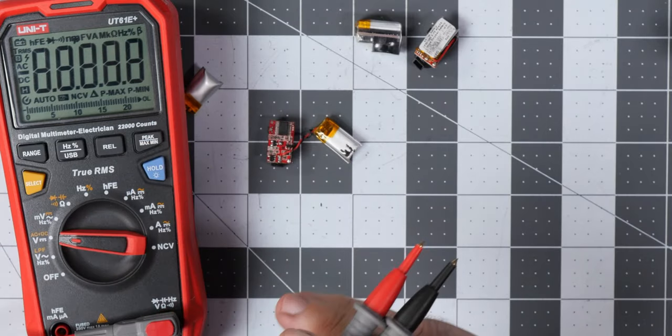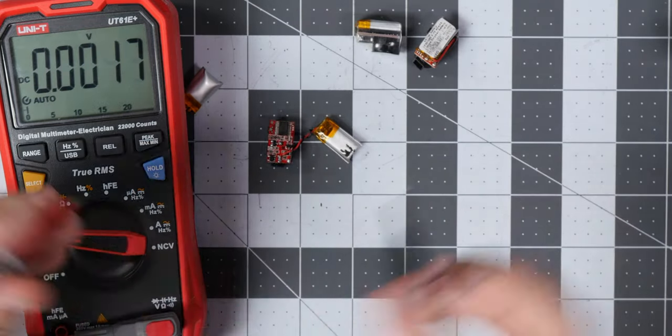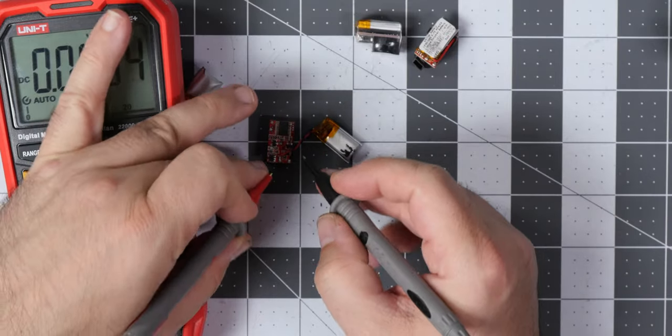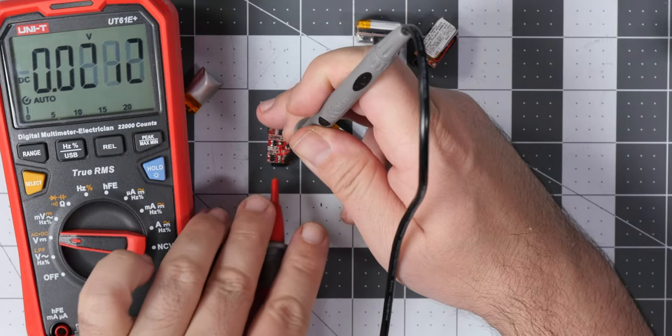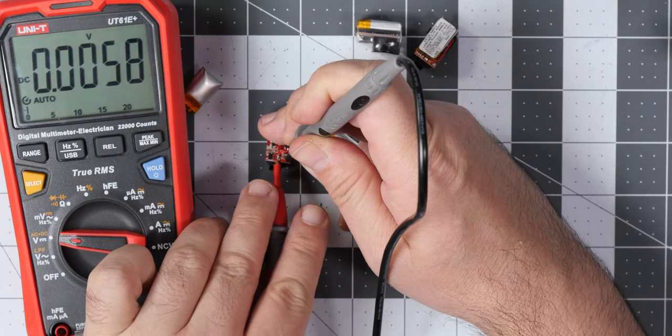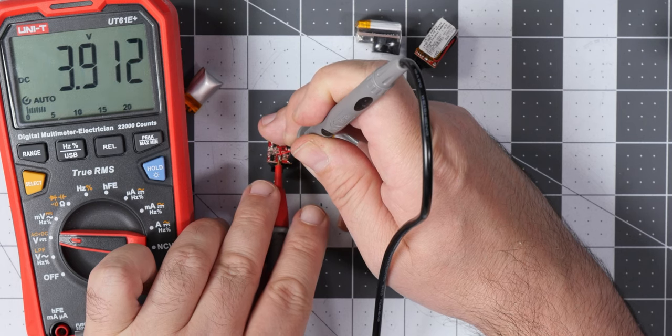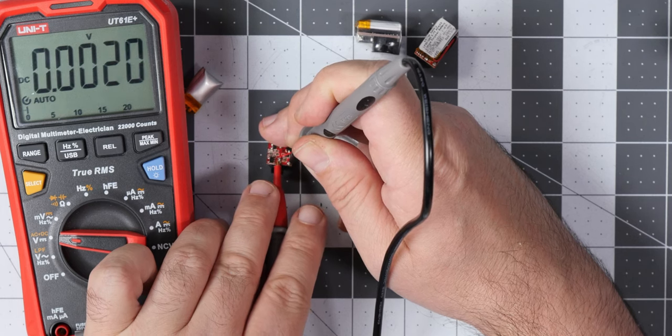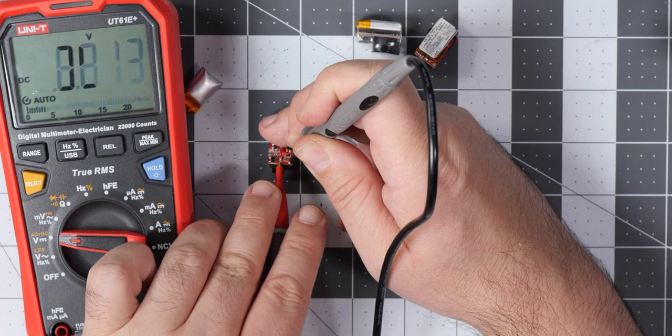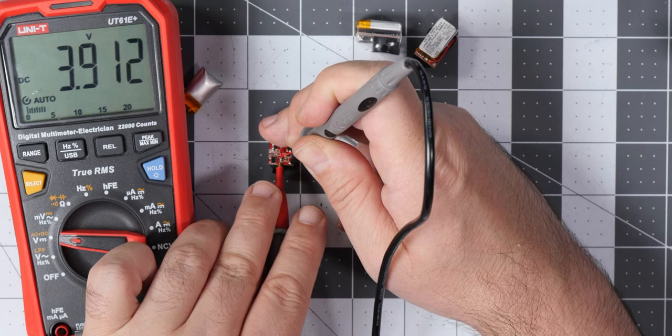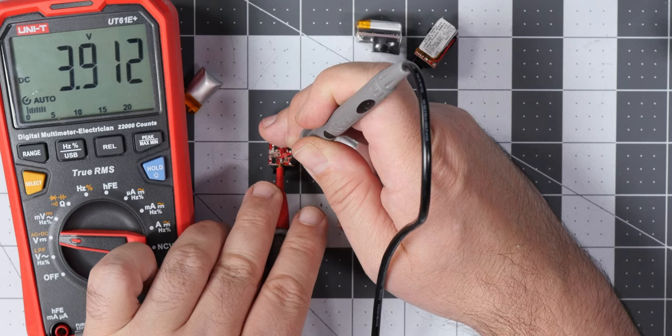How to verify that? Take the multimeter, set it into the voltage measuring mode and just check what's the voltage on the connectors of the battery, even when the module is connected. Like for example, here I have 3.9 volts, that means the battery is mostly charged, no problem.